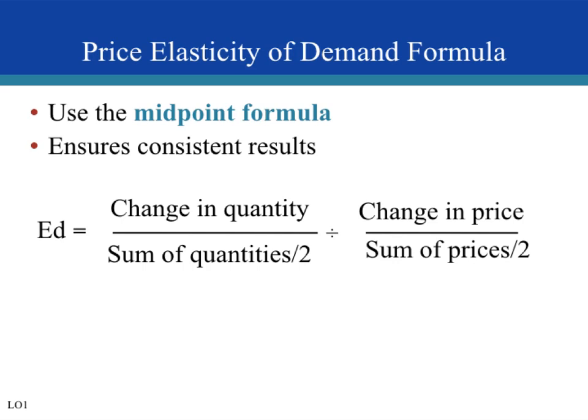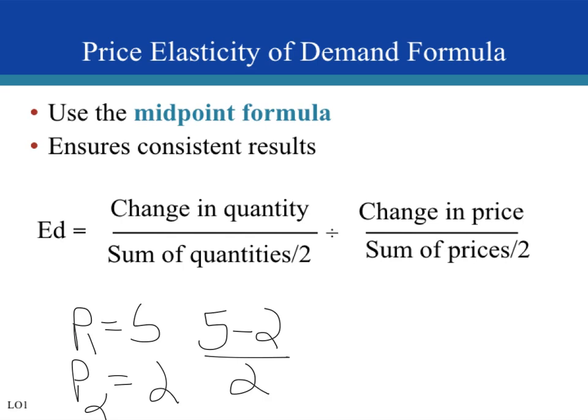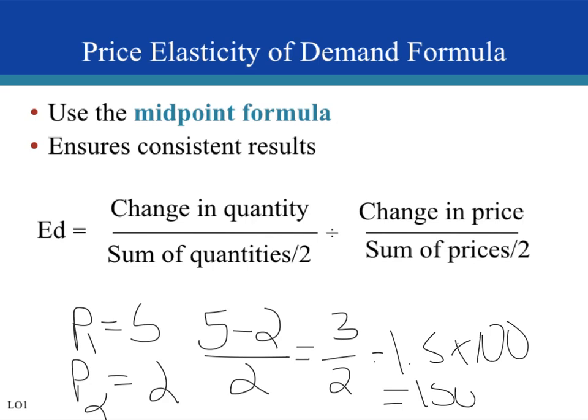This is going to be a little bit different than the traditional way we've been doing it. The traditional way is new minus old divided by old. So the old way would be new price minus old price divided by old price times 100. The problem is that it gives us inconsistent results. For example, with price 1 equal to 5 and price 2 equal to 2: 5 minus 2 divided by 2 gives us 3/2, which is 1.5 times 100 — that's 150% change in price.